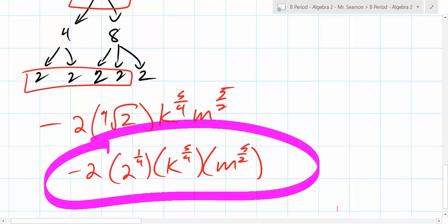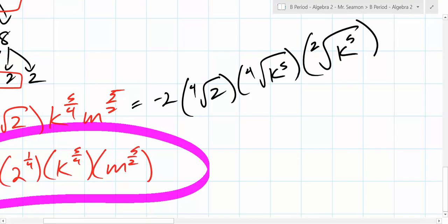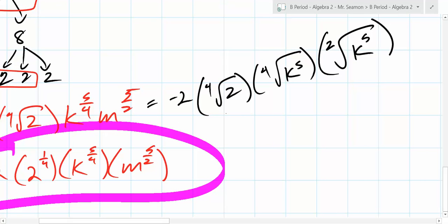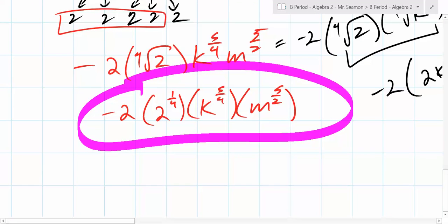Can you write it in radical form as well? Absolutely, you could. It's a little bit messier. You're going to end up with negative 2 times the 4th root of 2 times the 4th root of K to the 5th times the square root of M to the 5th. Couldn't you write 2 and K to the 5th together? Yes, you could then put them together. You could write it as negative 2 times 2K to the 5th to the 1/4. Are these the same? Yeah. There's lots of different ways to write the same thing.